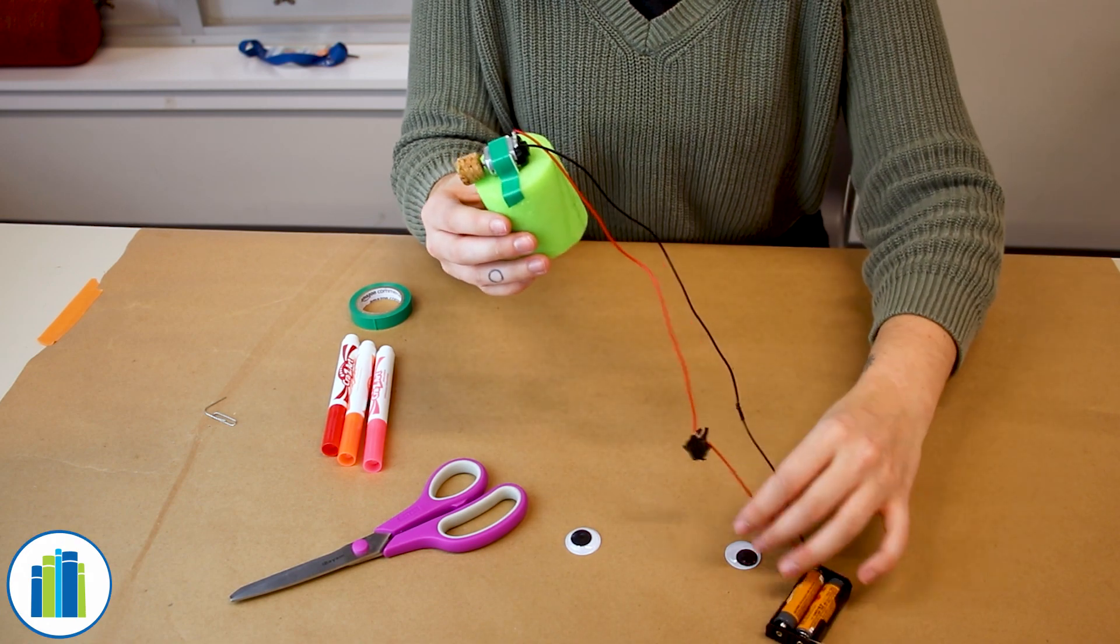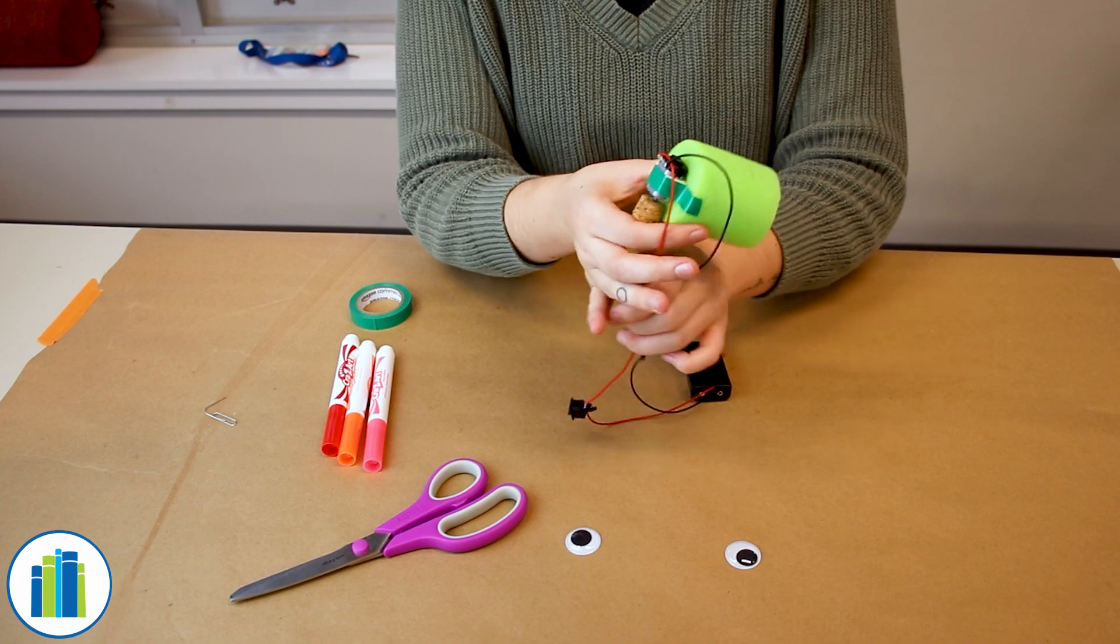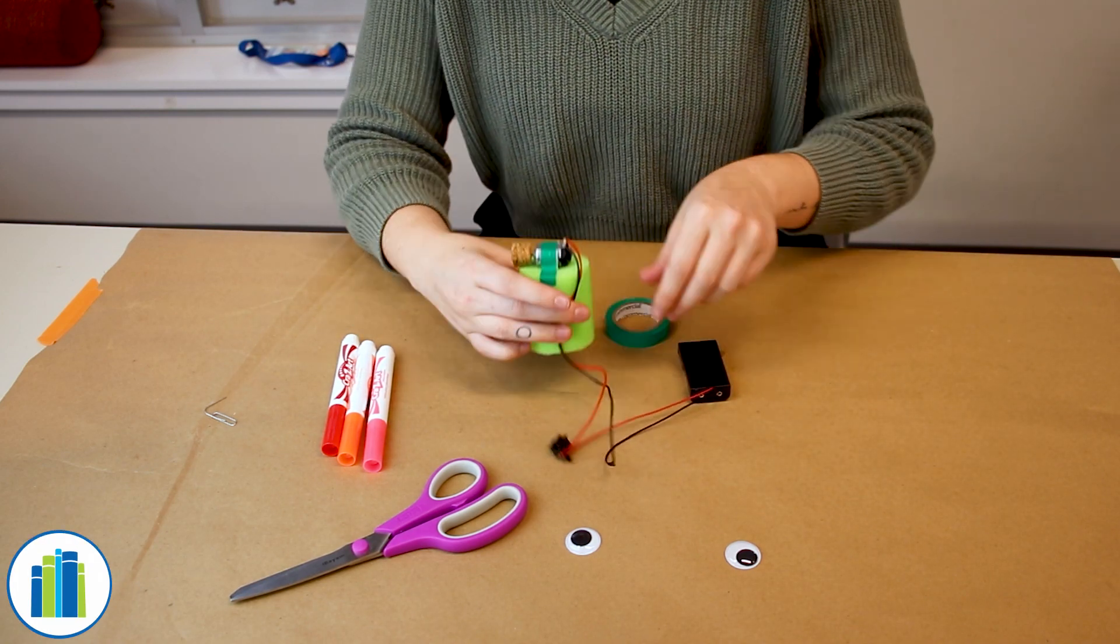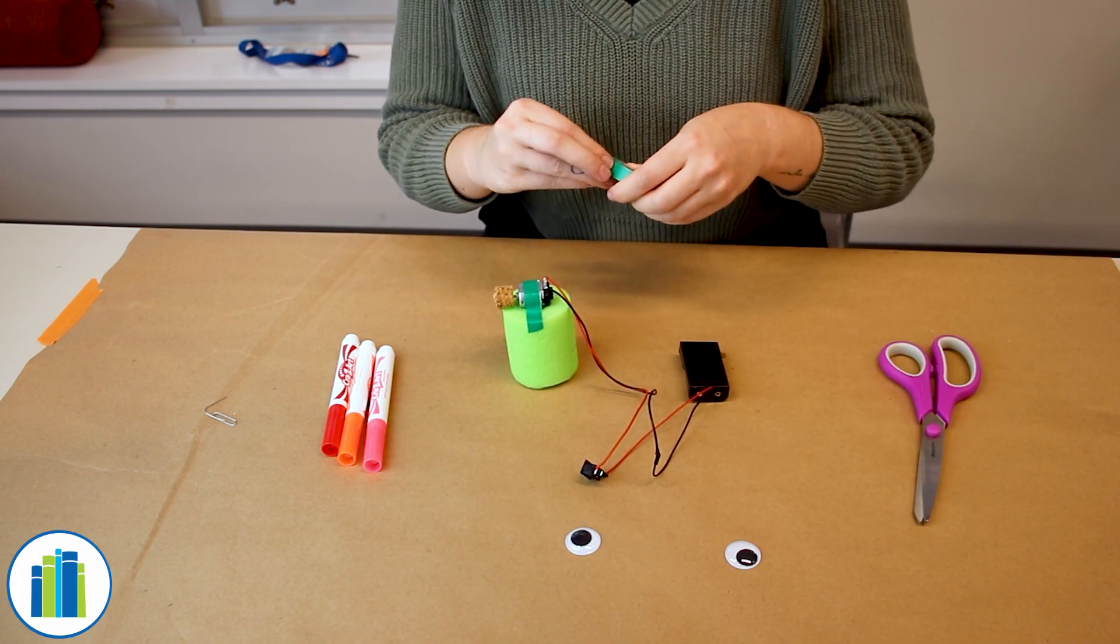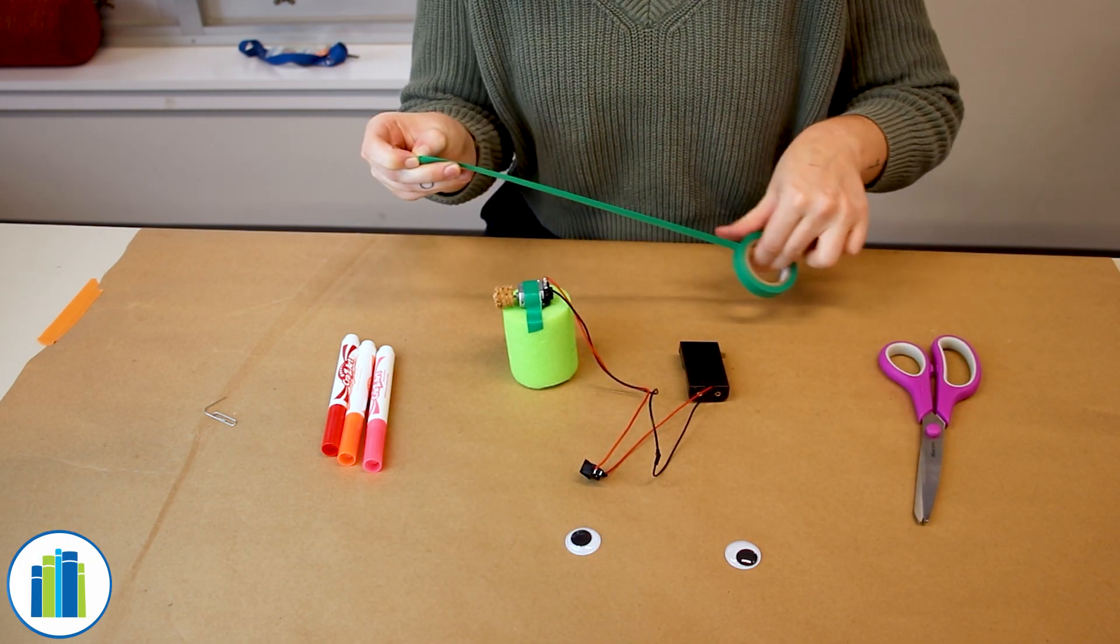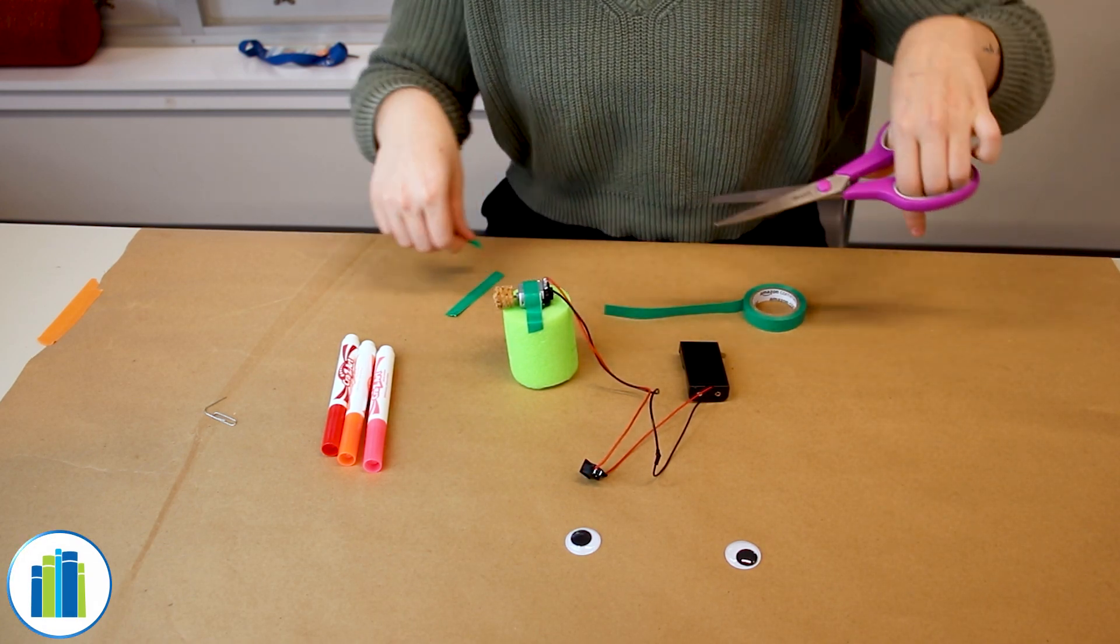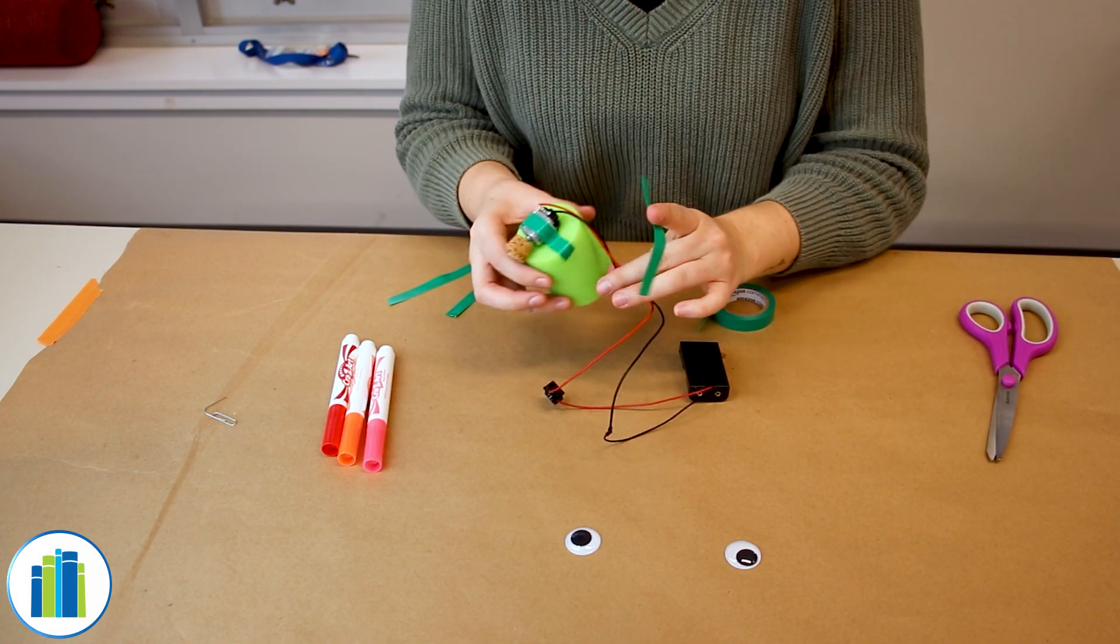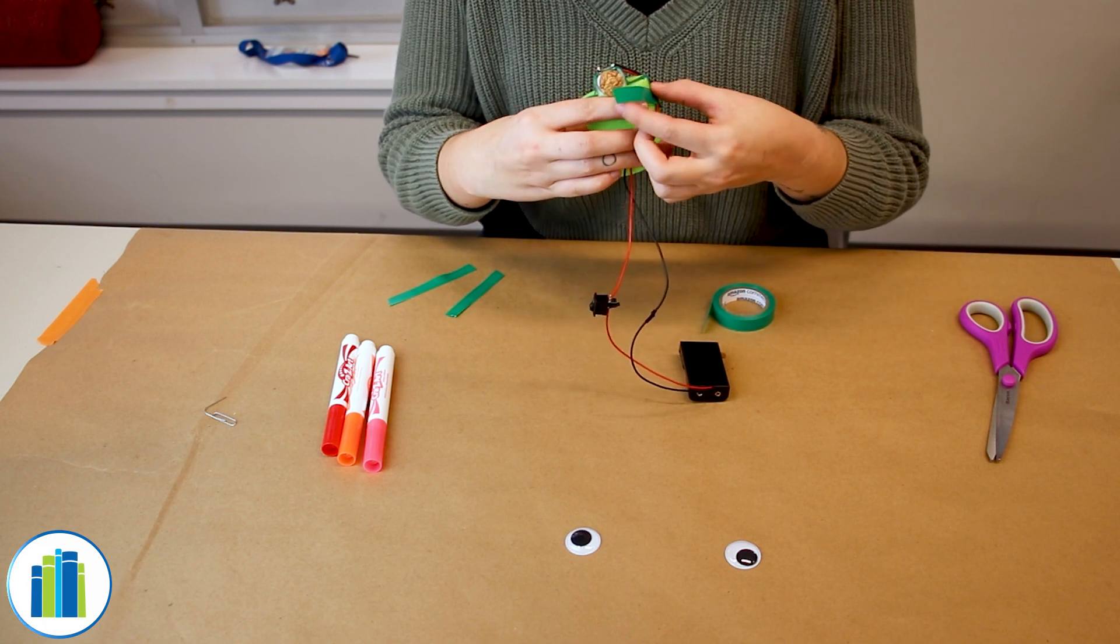And then these wires are really long, so we're just going to wrap them around and tape them so that they're not in the way. So I'm going to get a couple pieces of tape and then I'm going to start wrapping my wires and then taping them.